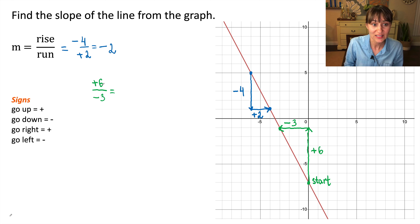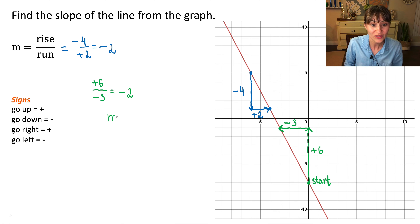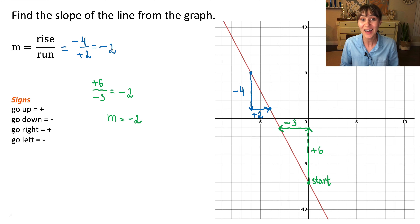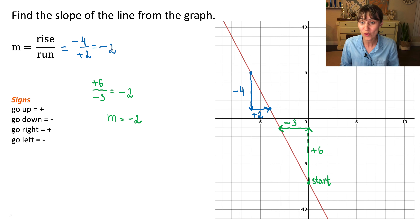Let's calculate. Six divided by negative three will be negative two. So the slope of this line is negative two. Whether we use these two points or the other two points, you see how it works?